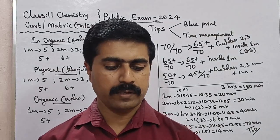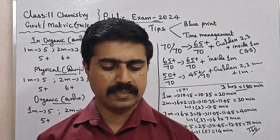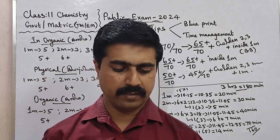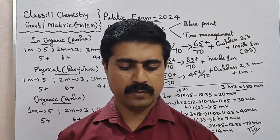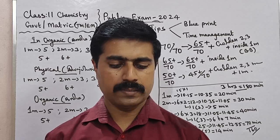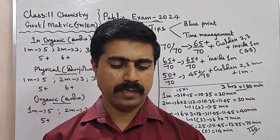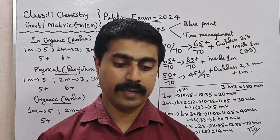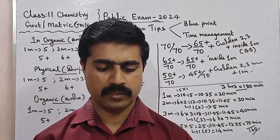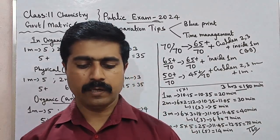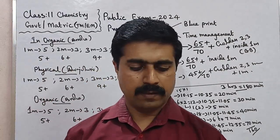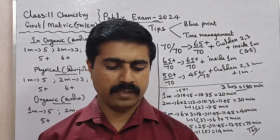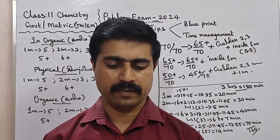Third question is, What is Mayer-Rokitansky syndrome? Lesson 3, book inside, topic number 3.7. Fourth question is, What is Lyonisation? L-Y-O-N-I-S-A-T-I-O-N. Lesson 4, book bag, question number 27.